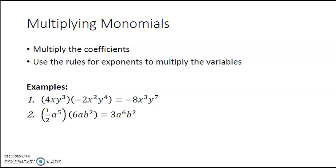Let's take a look at two examples. In the first example, we have the monomial 4xy to the third, multiplied by negative 2x squared y to the fourth. We multiply the coefficients: 4 times negative 2 gives us negative 8. Then since we have x's in both monomials, x times x squared is x to the third — using the product rule, x to the first plus x to the second gives x to the third. For the y's, y to the third times y to the fourth is y to the seventh. So we have a product of negative 8x to the third y to the seventh.